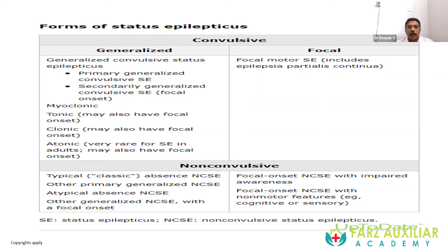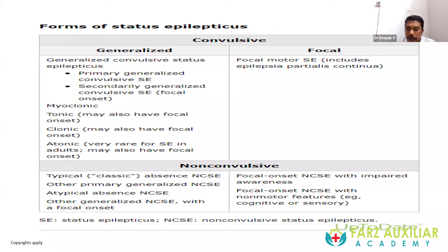In non-convulsive status epilepticus, clinical seizures are not evident — only EEG evidence of seizure will be present, but the patient will have abnormal mentation. A typical example is the absence seizure, where the patient may look clinically normal but is unaware of surroundings. There are other primary generalized non-convulsive and atypical non-convulsive status seizures, as well as focal onset non-convulsive status seizures with or without motor features.